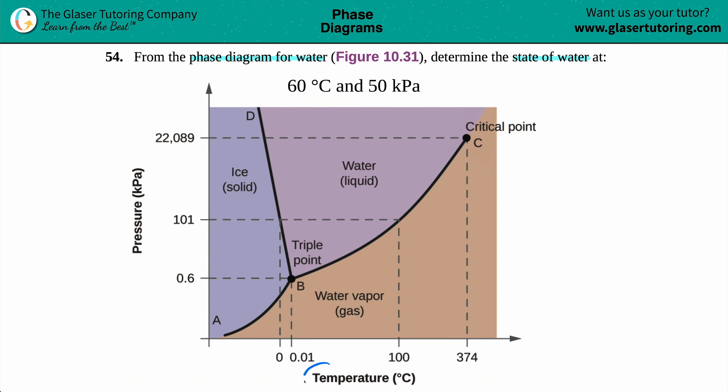The x coordinate here is temperature and the y coordinate is pressure in kilopascals, and that's exactly what they gave us here. They gave us 60 degrees Celsius, and the unit for the temperature in the x-axis is degrees Celsius, so this 60 degrees Celsius is basically your x coordinate and the 50 kilopascals is your y coordinate.